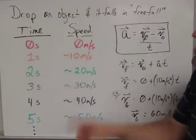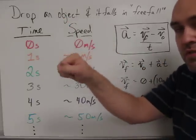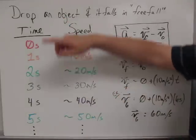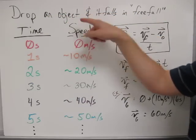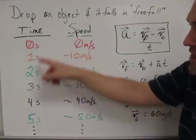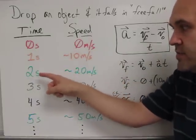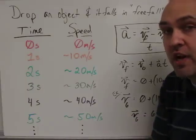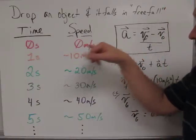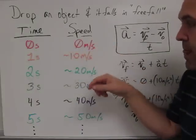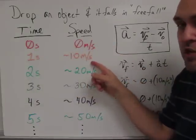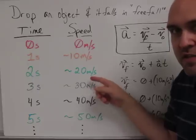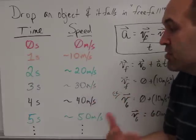If you drop an object, just drop it so it starts from rest, and it falls in free fall, this table tells us how to calculate, or indicate, the time of fall in second intervals, one, two, three, and four, and five seconds, and then what the speed would be at each time. So you can see at time zero we have zero speed. At one second we have 10 meters per second. At two seconds we gain another 10 meters per second because the acceleration is 10 meters per second per second.